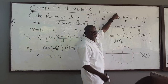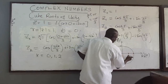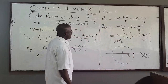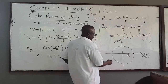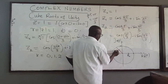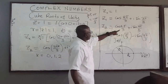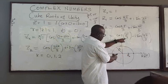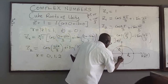Z sub zero has modulus one and argument zero, so it lies along the positive real axis. Z sub one has an angle of two pi over three — about 120 degrees — so it's located up here. Z sub two has argument four pi over three, or equivalently negative two pi over three, so it lies in the lower half of the plane.